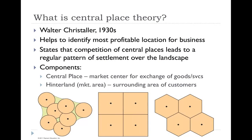Now getting into where services are distributed and why. A major theory here is Central Place Theory — sometimes called the Christaller Theory because it was developed by Walter Christaller in the 1930s. It helps businesses identify the most profitable location and states that competition among central places leads to a regular pattern of settlement across the landscape.